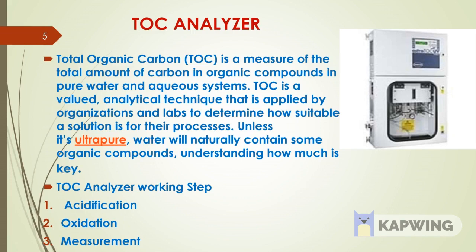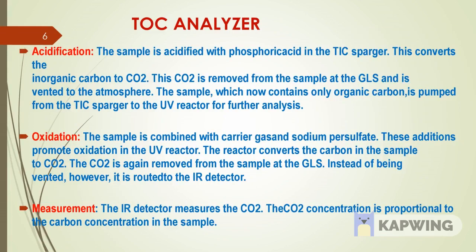In the acidification step, phosphoric acid is used. When the water passes into the TIC sparger, phosphoric acid is added, which converts the inorganic carbon to CO₂. This CO₂ is then removed from the sample as a gas and vented to the atmosphere, leaving the sample consisting only of organic carbon.